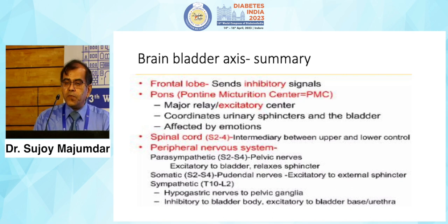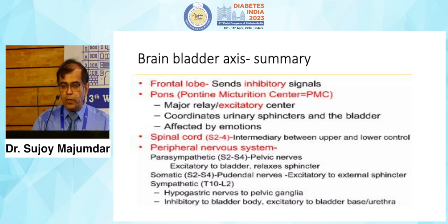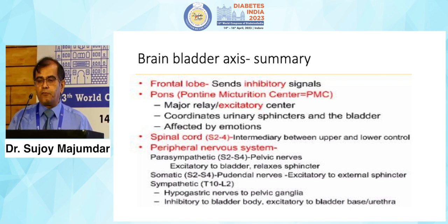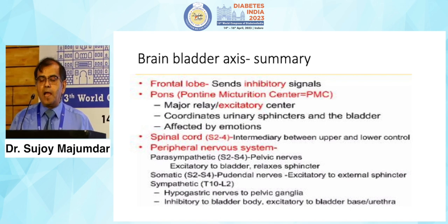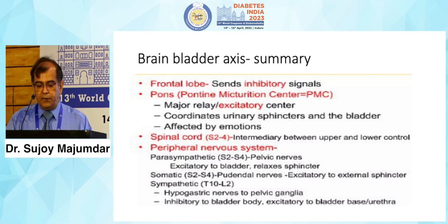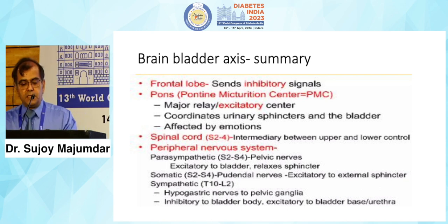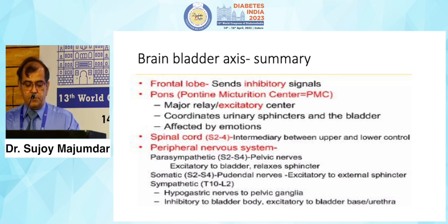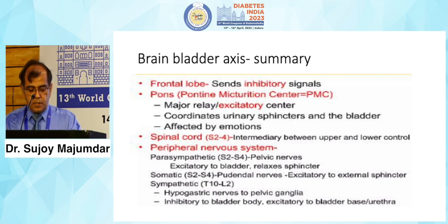The pons is the actual area which controls bladder function. The frontal lobe sends inhibitory signals down to the pons, preventing the bladder from relaxing and voiding urine — preventing a very embarrassing situation in public. In the pons we have the Pontine Micturition Center, or PMC, which is a major relay or excitatory center that coordinates the urinary sphincters and the bladder.